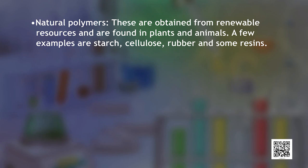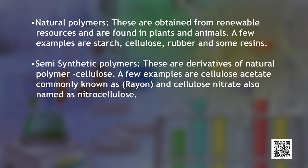Natural polymers are obtained from renewable resources and are found in plants and animals. A few examples are starch, cellulose, rubber and some resins. Semi-synthetic polymers are derivatives of the natural polymer cellulose. A few examples are cellulose acetate, commonly known as rayon, and cellulose nitrate, also called nitrocellulose. The third type of classification is on the basis of mode of polymerization.